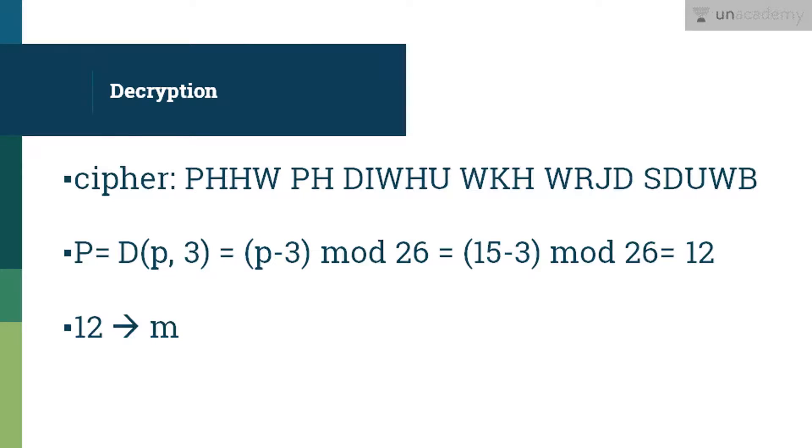Now we look into decryption. For decryption, just reverse the process. Instead of adding 3, we minus 3 from the cipher text and then mod by 26.